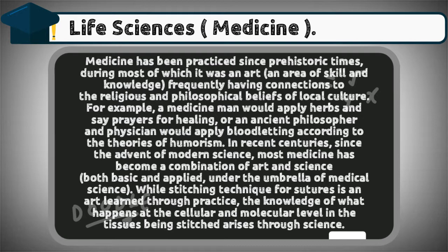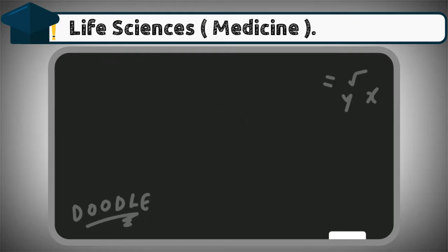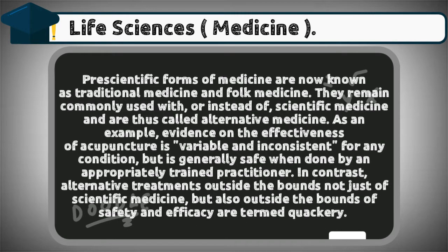at the cellular and molecular level in the tissues being stitched arises through science. Pre-scientific forms of medicine are now known as traditional medicine and folk medicine. They remain commonly used with or instead of scientific medicine and are thus called alternative medicine. As an example, evidence on the effectiveness of acupuncture is variable and inconsistent for any condition,